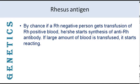By chance, if an RH negative person gets transfused with RH positive blood, he or she will start synthesis of anti-RH antibody. Without transfusion of RH positive blood, there is no synthesis of anti-RH antibody. If only a few RBCs come from the positive person, antibody production will start within three days. And if a large amount of blood is transfused, a reaction is observed — the entire body feels burning and the body may become bluish due to coagulation.